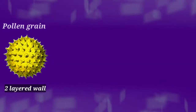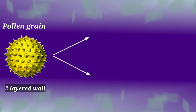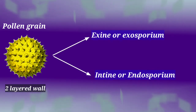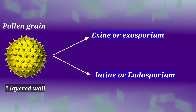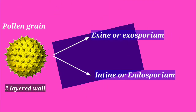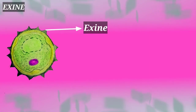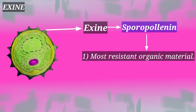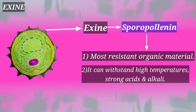Pollen grains have a prominent two-layered wall, namely the hard outer layer called exine or exosporium and inner layer called entine or endosporium. Exine wall is thick and protective and may have spinous ornamentation and is made up of a substance called sporopollenin. It is the most resistant organic material.